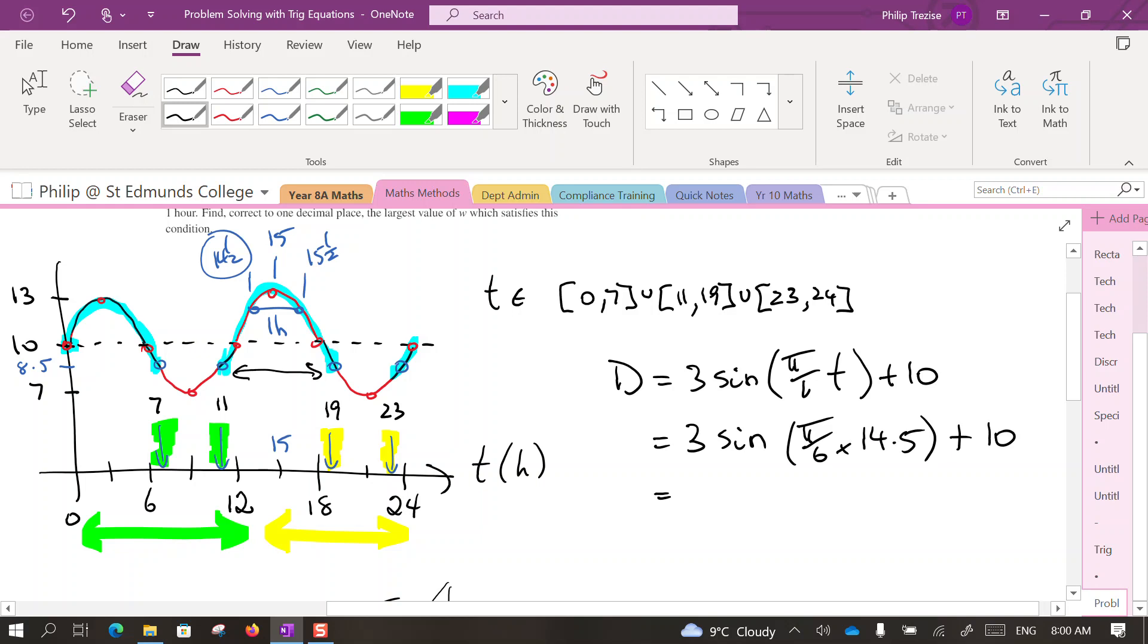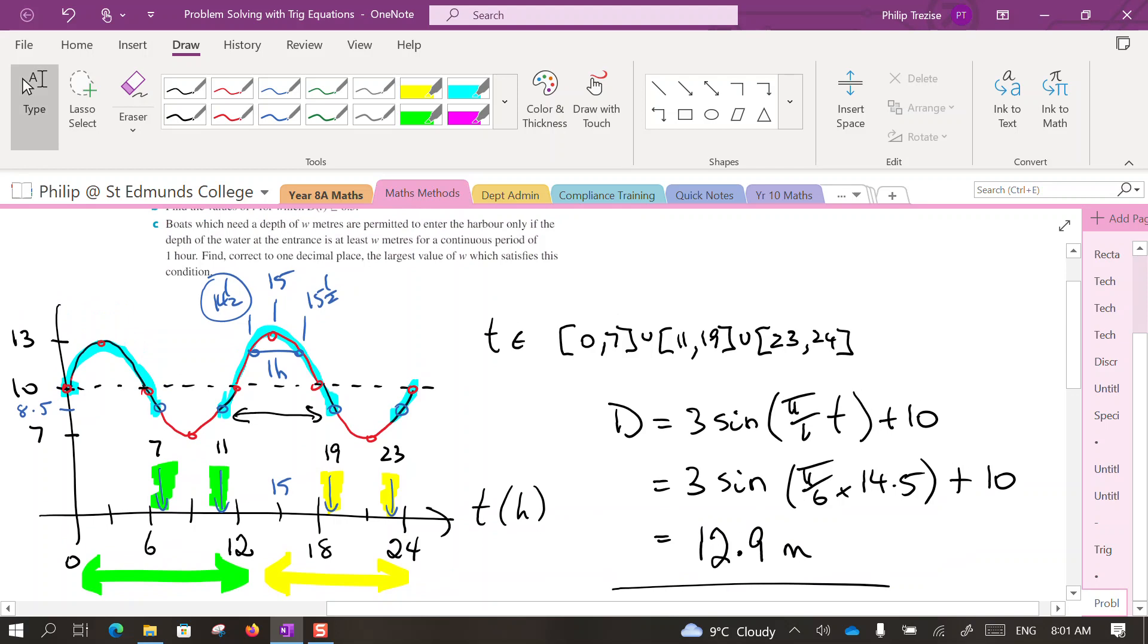Now popping that onto your calculator, you'll soon see—make sure you're in radians—that that comes to a depth of 12.9 meters. And that's the answer to part C of the question. If the depth is 12.9 meters, then you'll have that depth for one hour, just half an hour either side of high tide. And that would be from 14 and a half hours to 15 and a half hours, or 2:30 in the afternoon until 3:30 in the afternoon. So the question was asking for depth, and that's the answer: 12.9. Thanks for watching.